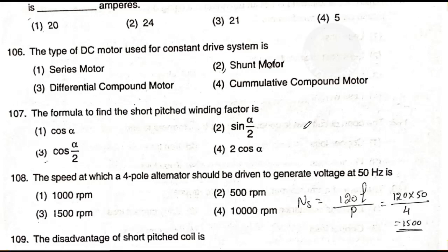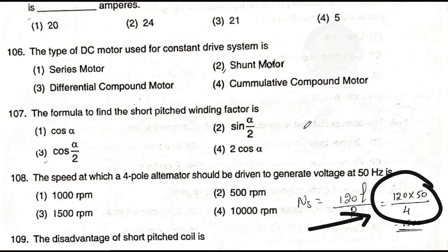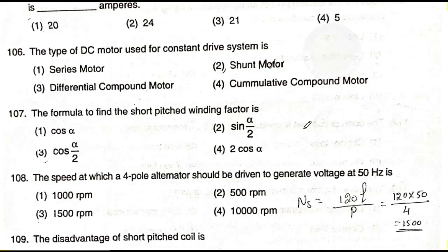Question number 108: The speed at which a four-pole alternator rotor should be driven to generate voltage at 50 Hz is — option one: 1000 RPM; option two: 500 RPM; option three: 1500 RPM; option four: 10000 RPM. The answer is option three — 1500 RPM. A four-pole alternator rotates at 1500 RPM to produce 50 Hz frequency.